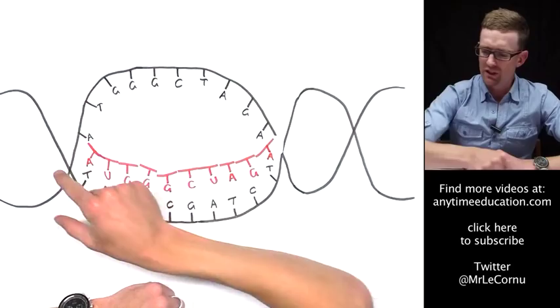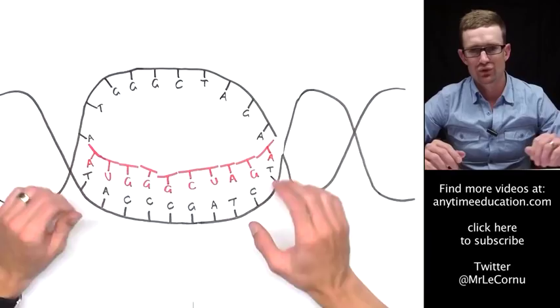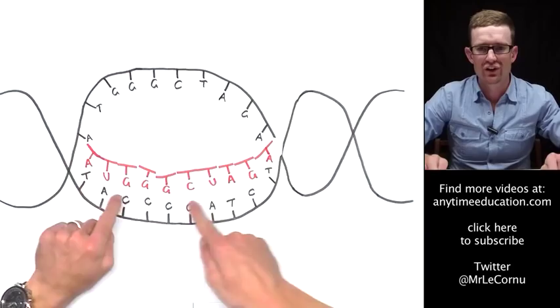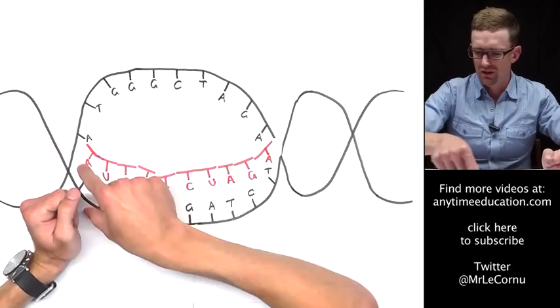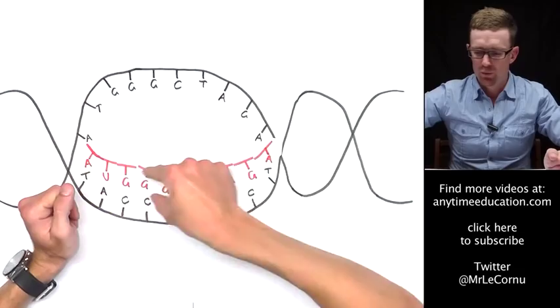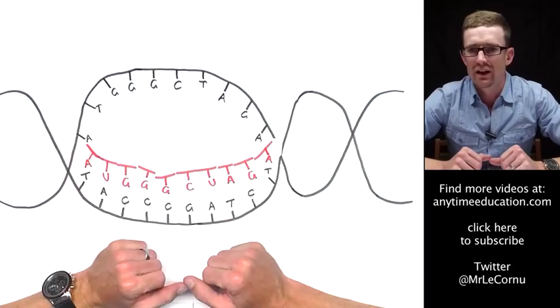That process will keep occurring along the length of the gene. Now let's just remind ourselves genes are up to hundreds of base pairs long, so this is definitely not a gene; it's just for simplicity. The DNA will keep unzipping until we reach the end of the gene and the mRNA will keep forming. That process is aided by an enzyme called RNA polymerase.